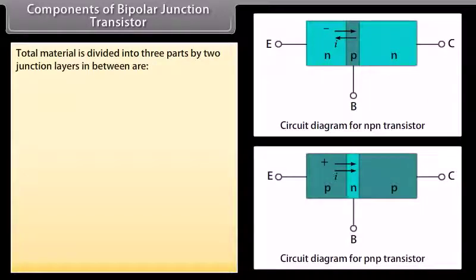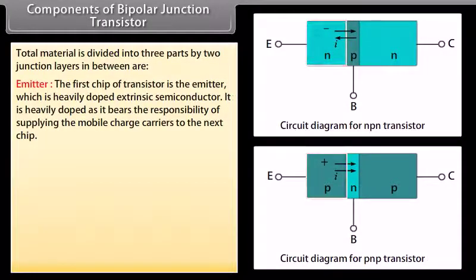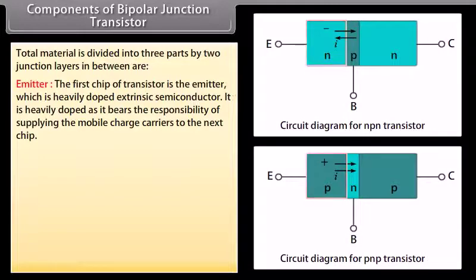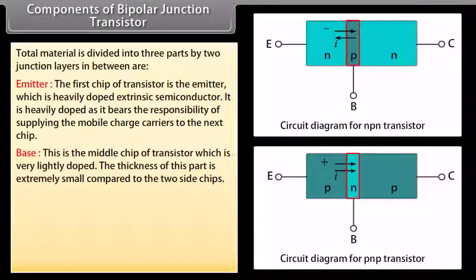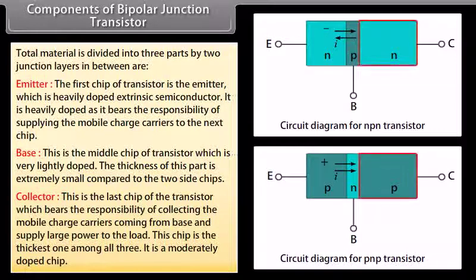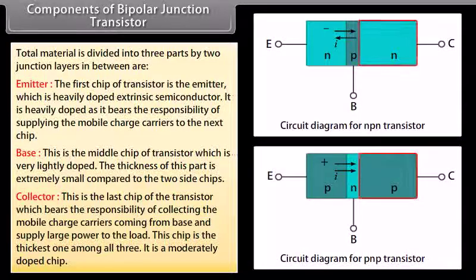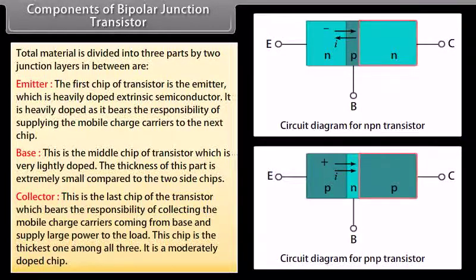Components of a Bipolar Junction Transistor: The material is divided into three parts by two junction layers. The emitter is the first chip, which is heavily doped, as it bears the responsibility of supplying mobile charge carriers to the next chip. The base is the middle chip, which is very lightly doped and extremely thin. The collector is the last chip, which collects mobile charge carriers coming from the base and supplies large power to the load. It is the thickest and moderately doped chip.